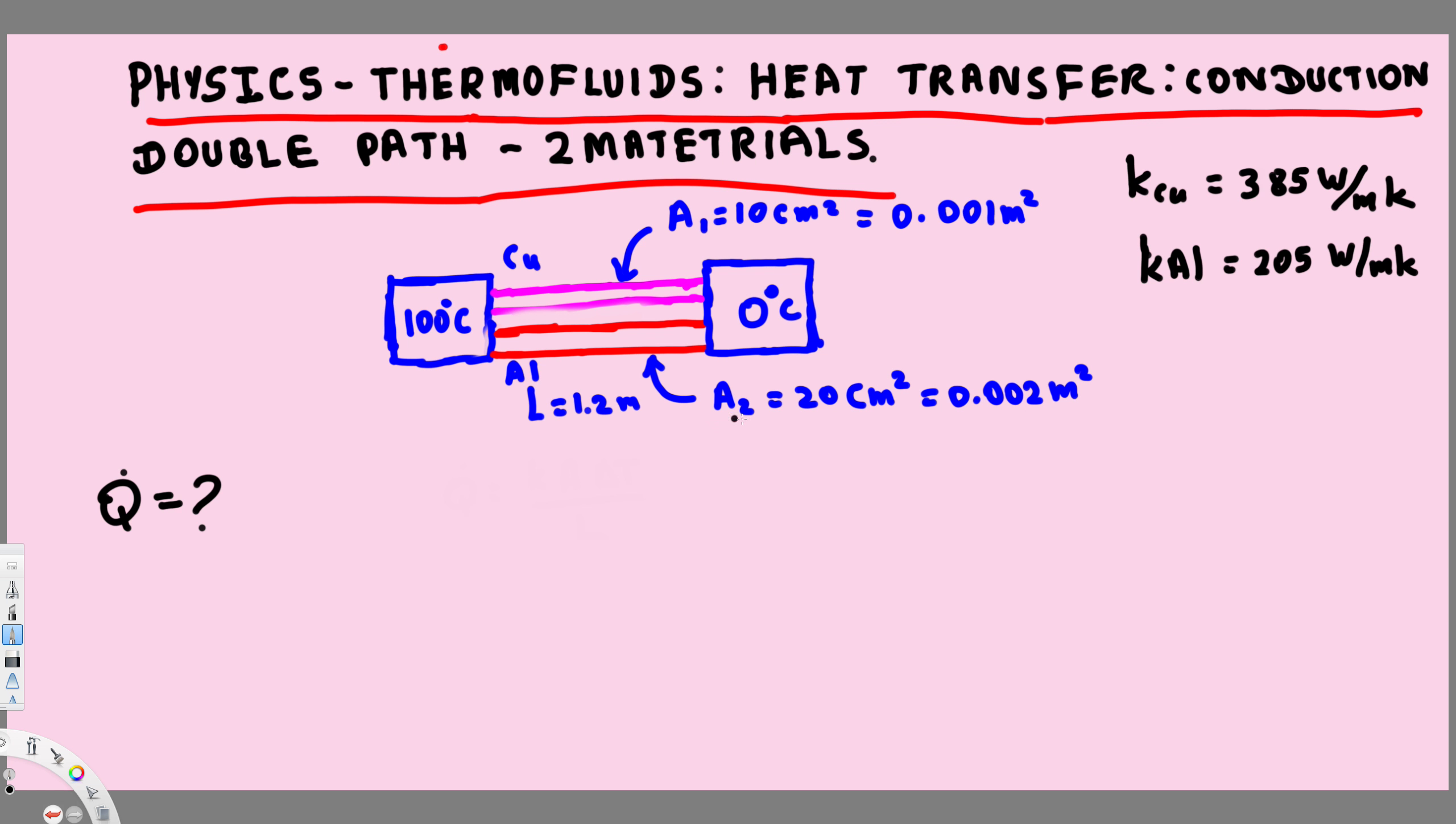Whenever we have the same cross-sectional area, we just add the thermal conductivity values and multiply by delta T over L. But since we have two different areas, we have to use a different equation.